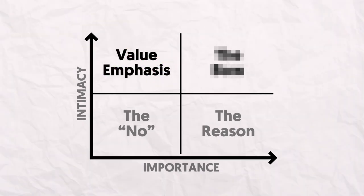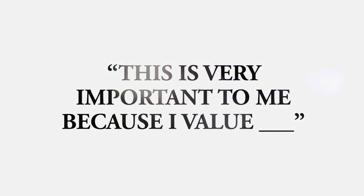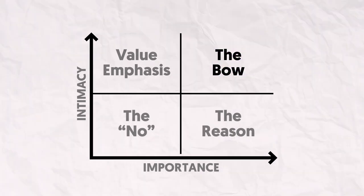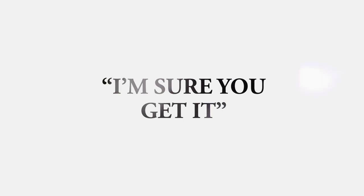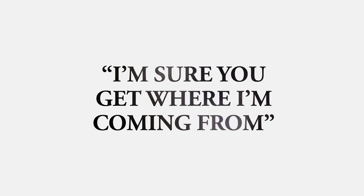At the acquaintance or friendship level, give a reason: 'I won't be able to because I'm focused on paying off my debt and prioritizing non-essential spending toward my debt payoff.' The next step is value emphasis — attach a value to your reasoning: 'Paying off my debt provides me freedom, and freedom is very important to me.' Then, especially for someone with a strong personality, add the 'bow' — wrapping it up with 'I'm sure you understand' or 'I'm sure you get where I'm coming from.' If in person, nod your head while you say it.